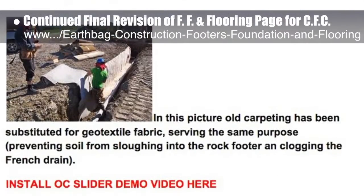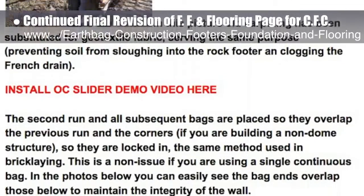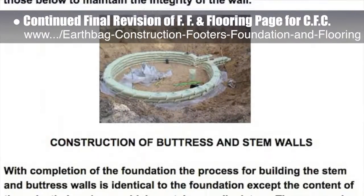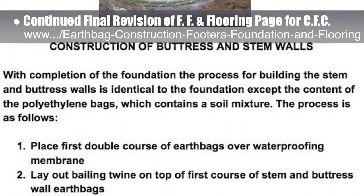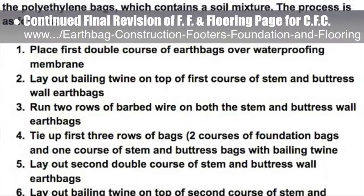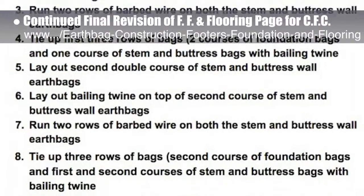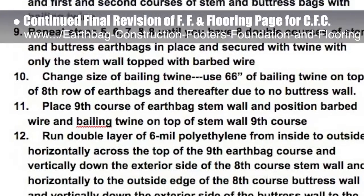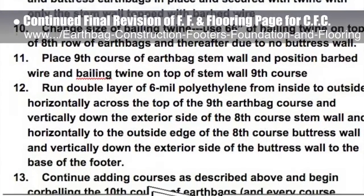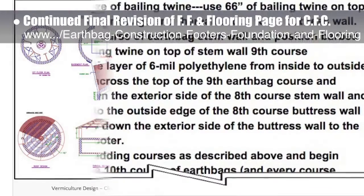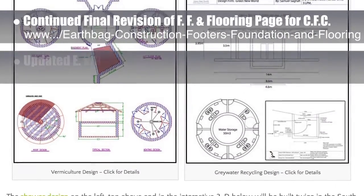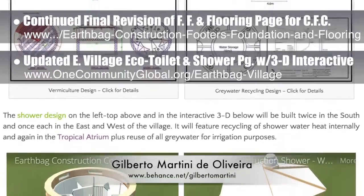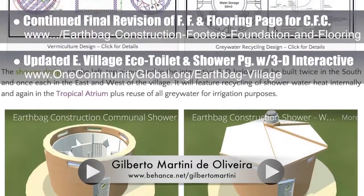This week's work included adding geotextile fabric and perforated corrugated pipe descriptions, recalculating lengths of geotextile and polyethylene, altering the water collection gutter with additional stucco and dropping the polyethylene barrier down one more bag on the interior wall, plus rewriting the sequence of steps for foundation and stem, buttress, and earthbag walls. We'd say we're now 25% complete with this revision. We also updated the Earthbag Village eco-toilet and shower page with 3D interactives from Giberto Martini de Oliveira, and added other edits there as well.